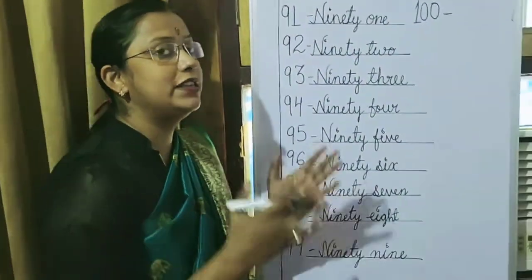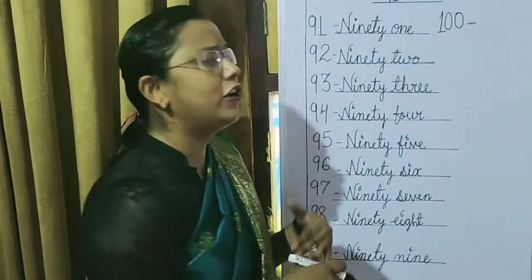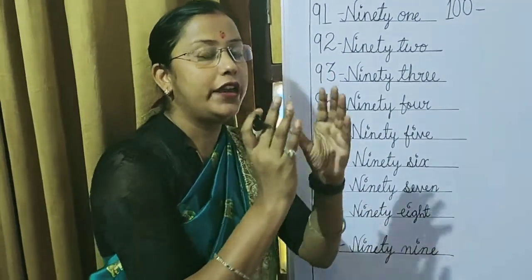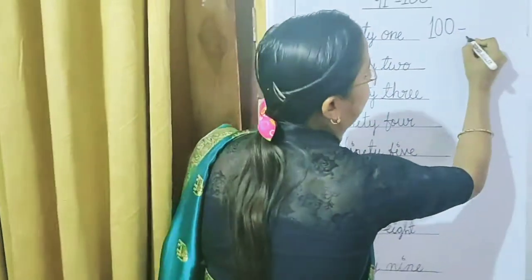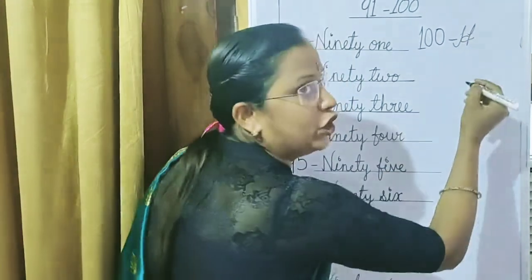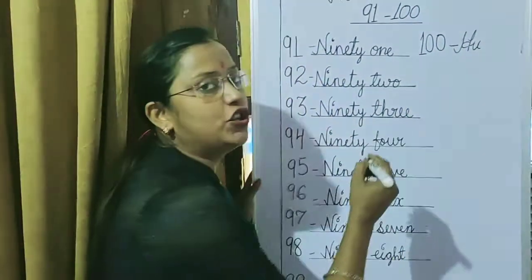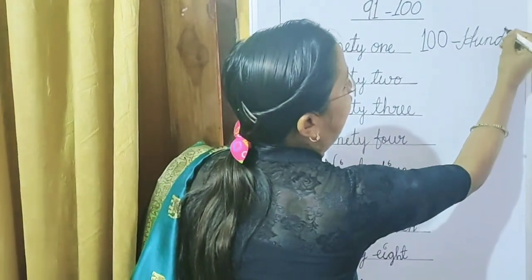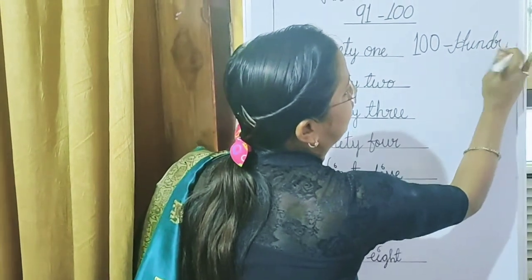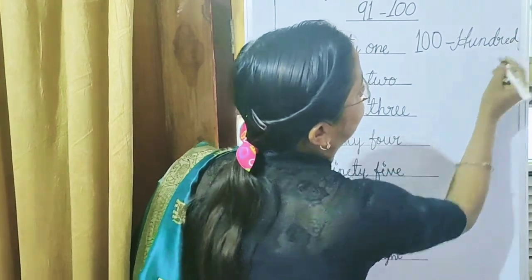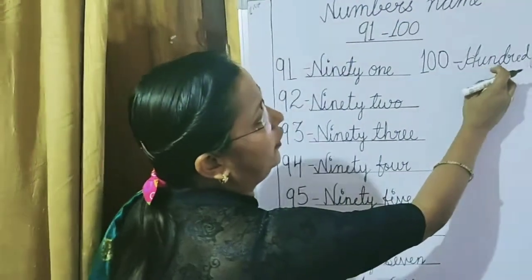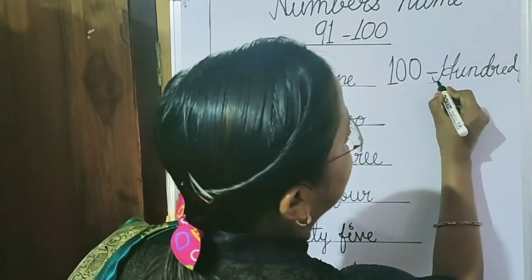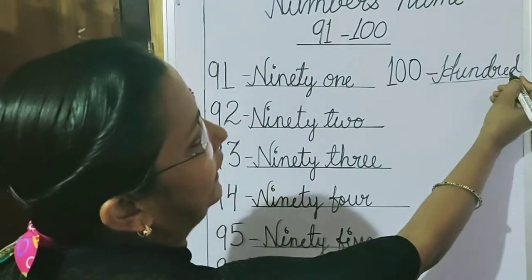Now, children, we see the spelling of 100. What is the spelling of 100? We break the word. Start from H — H, U, N: that is 'hun'. Then D, R, E, D: that is 'dred'. So H-U-N-D-R-E-D — that is 100. Let's say it once again: H-U-N-D-R-E-D, 100.